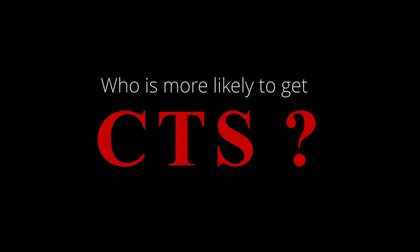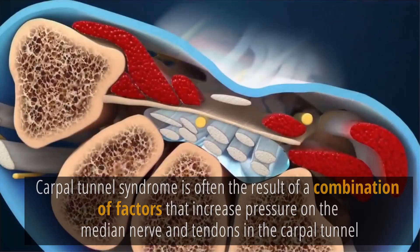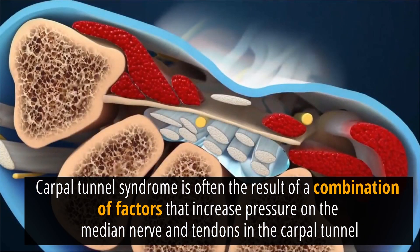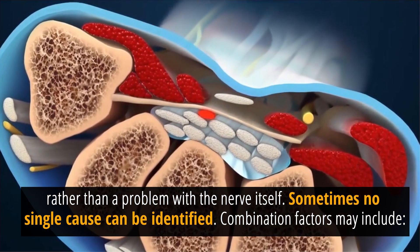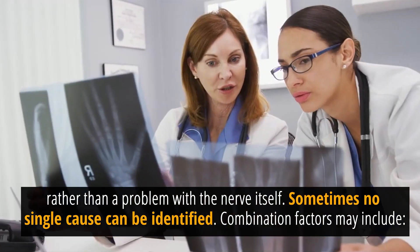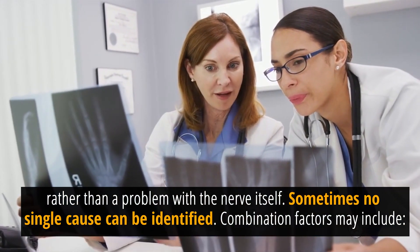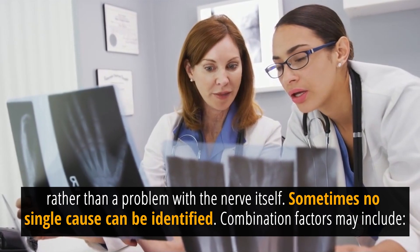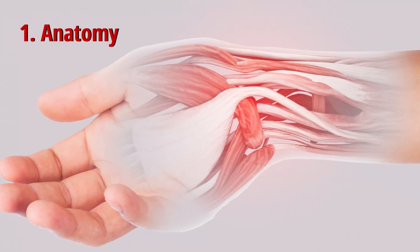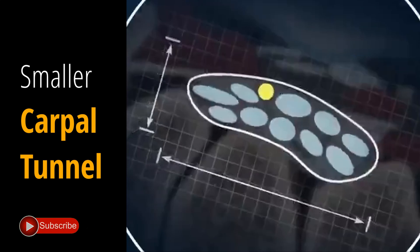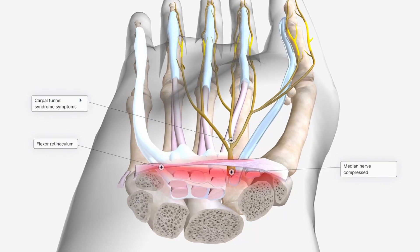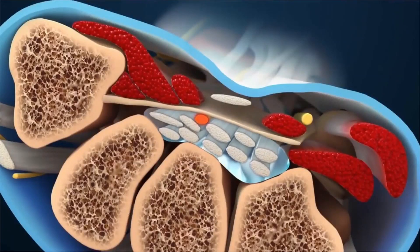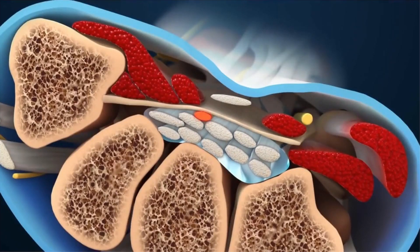Carpal tunnel syndrome is often the result of a combination of factors that increase pressure on the median nerve and tendons in the carpal tunnel, rather than a problem with the nerve itself. Sometimes no single cause can be identified. Some individuals may have a smaller carpal tunnel or a predisposition to carpal tunnel syndrome due to their wrist anatomy, making them more susceptible to compression of the median nerve.